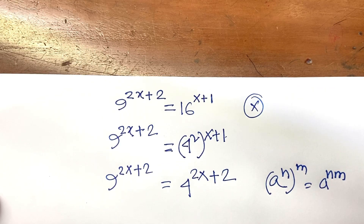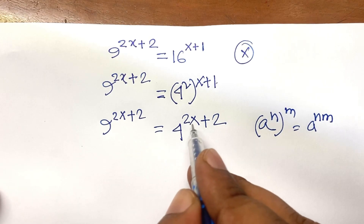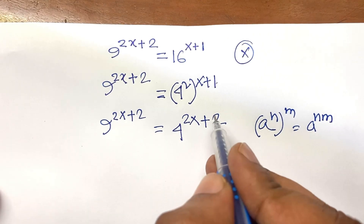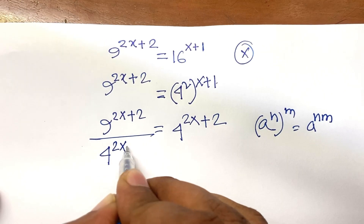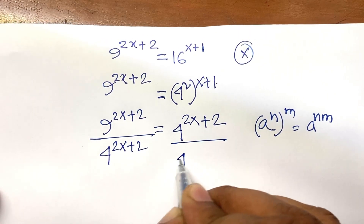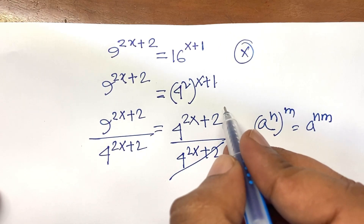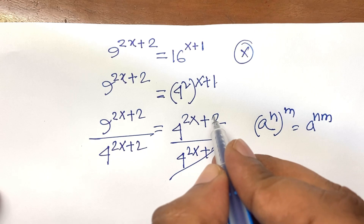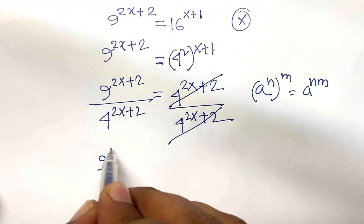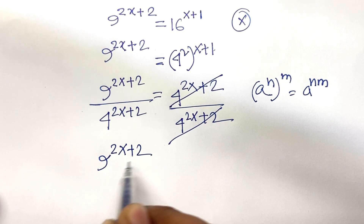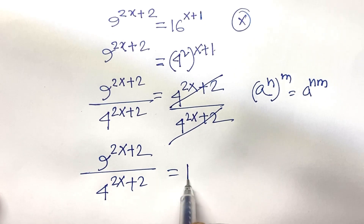I follow this rule in this line. Now here is 9 to the power of 2x plus 2 equal to 4 to the power of 2x plus 2. The powers are the same on both sides. So I divide both sides by 4 to the power of 2x plus 2. The 4 to the power of 2x plus 2 on the right side cancels, giving us 9 to the power of 2x plus 2 over 4 to the power of 2x plus 2 equals 1.